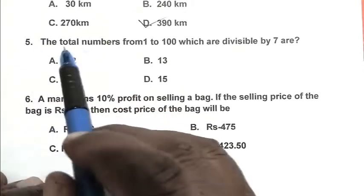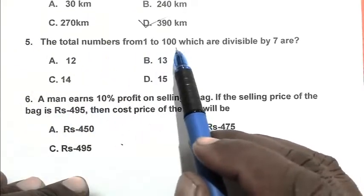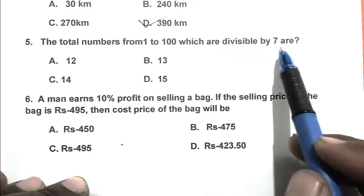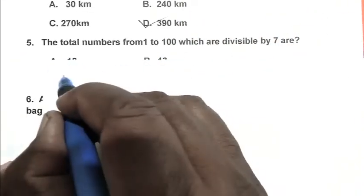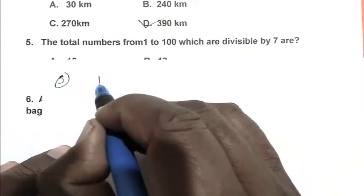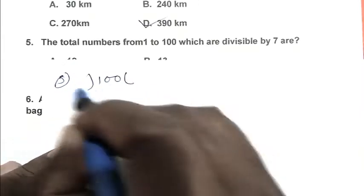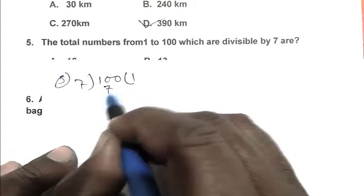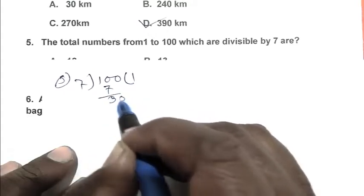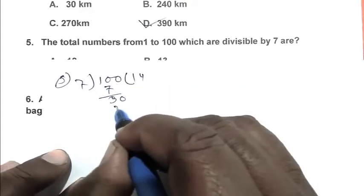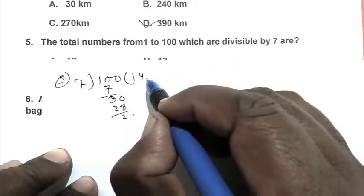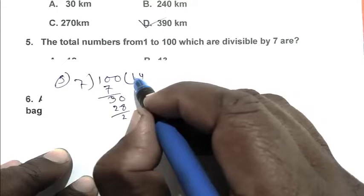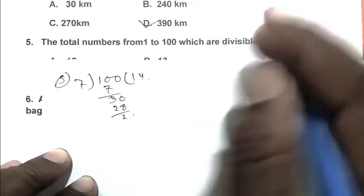Question number 5, the total numbers from 1 to 100 which are divisible by 7. First, we divide 100 by 7. 100 divided by 7 gives quotient 14. Here, total numbers are 14, so C is the right answer.